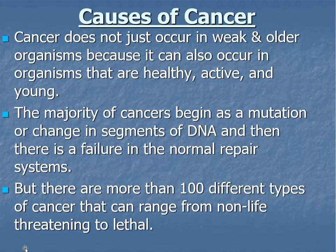Cancer doesn't just occur in weak or older organisms — it can occur in organisms that are completely healthy, active, and young. You can have cancer at any point in your life. In general, the majority of cancers begin as some type of mutation or a change in segments of DNA, followed by a failure of the normal repair system. So it's a multi-stage problem: DNA problems combined with system check failure. There are hundreds of different types of cancer, ranging from non-life-threatening to extremely lethal, depending on the cells being affected.